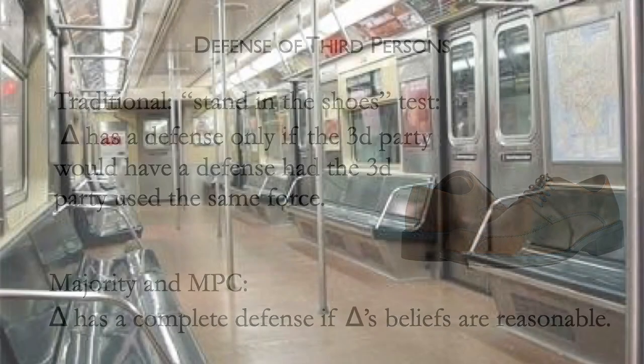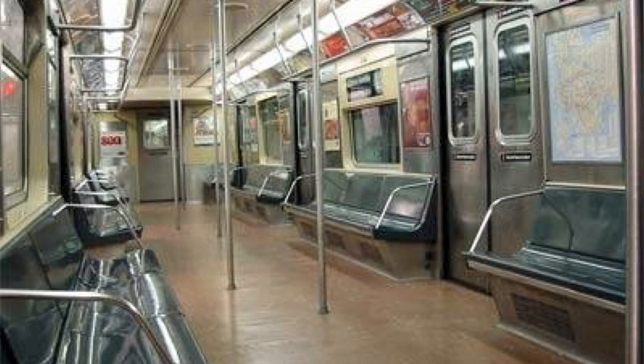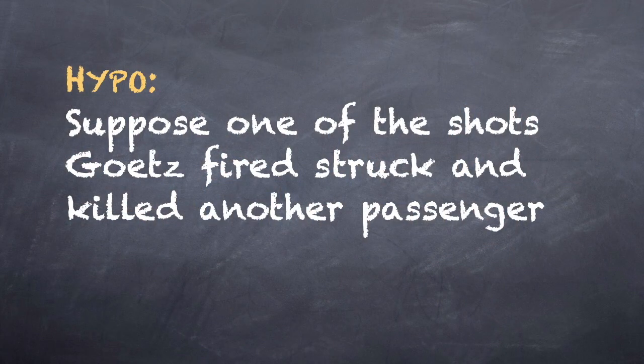One more thing. Go back to the facts of Goetz. Recall that this was not an empty subway car when Goetz opened fire. We don't know how crowded it was, but it was probably pretty well filled even on a Saturday afternoon. This raises the question: suppose one of the shots Goetz fired struck and killed another passenger. Let's stipulate, contrary to fact, that Goetz was privileged to use deadly force upon or toward Troy Canty. Does that mean it does not matter what happens to bystanders?